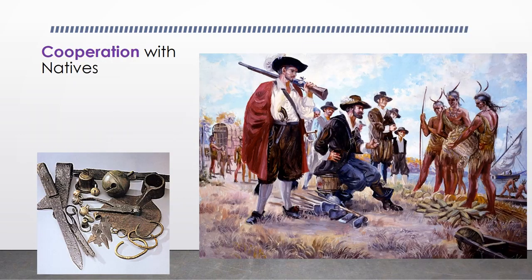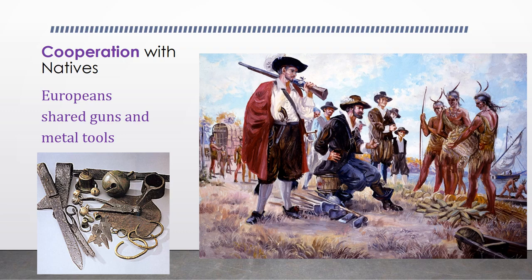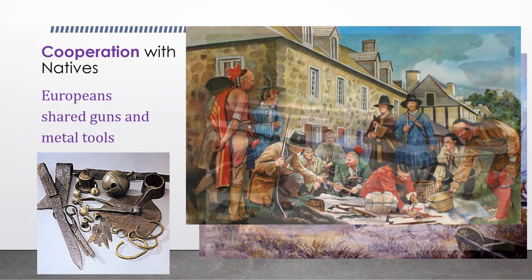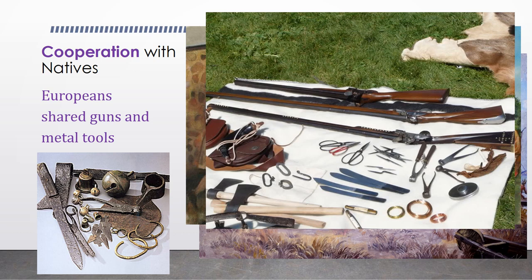There was cooperation with the Natives, and this was in the area of trading. Europeans shared guns and metal tools because these were items that the Native Americans did not have and could not make from the natural resources around them. Metal scissors, knives, bracelets, bells, and other metal tools were of great value to the Native Americans and were a hot commodity when traded.